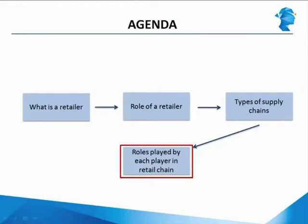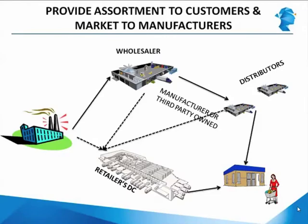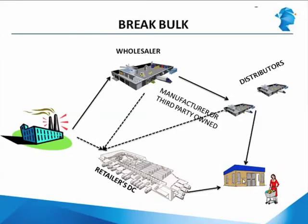We have seen the role a retailer plays. Let us now examine the role that each actor of the two value chains plays. The first role is that a retailer provides assortment to the customers and a market to the manufacturers. The four players are: in the manufacturer's value chain, the wholesaler and the distributors; and in the retailer's value chain, the distribution center and the store. Since this role means interfacing directly with the customers, only the store plays this role.